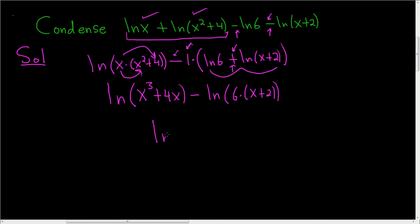So this is the natural log of – using the quotient rule – x cubed plus 4x divided by this stuff.